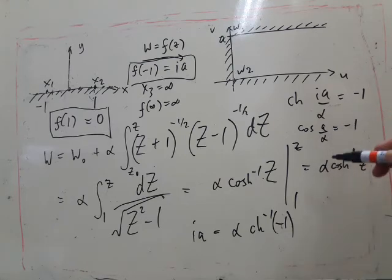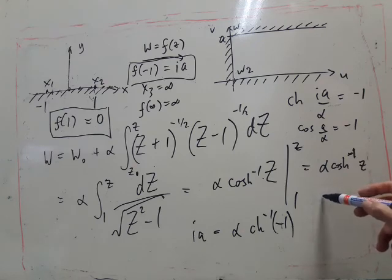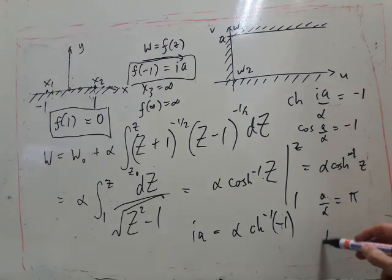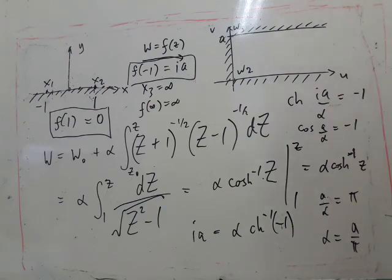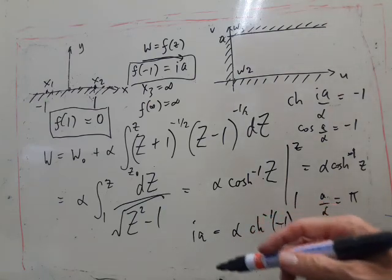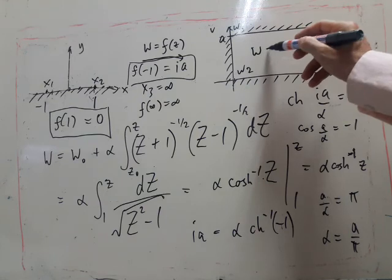Is equal to minus one is pi, so that means we have alpha equals a over pi. And our final answer is w equals a over pi inverse cosh of z is the transformation we want.